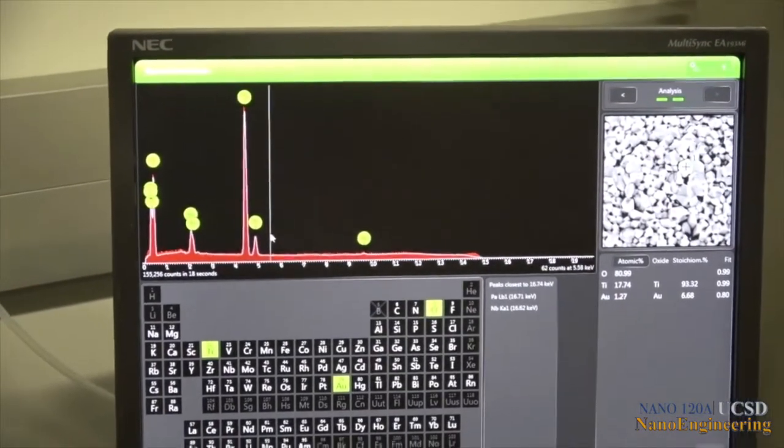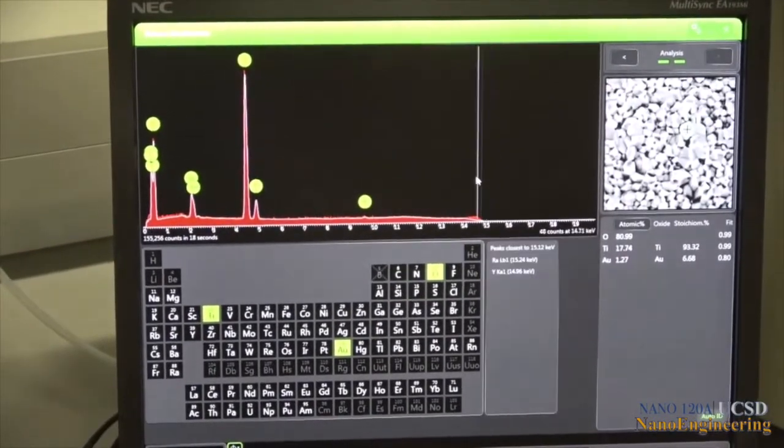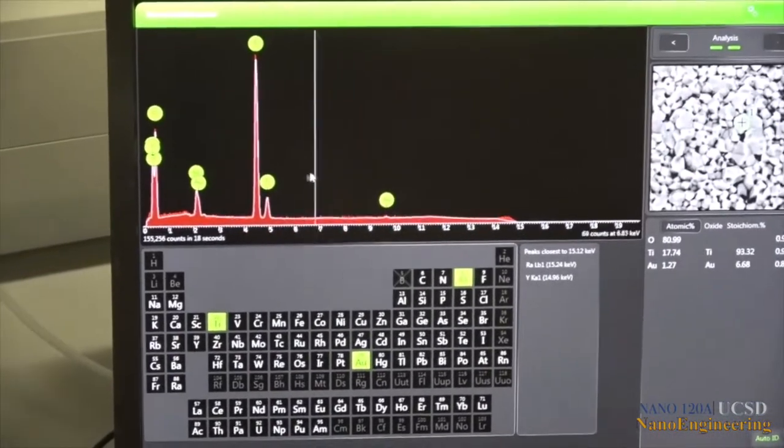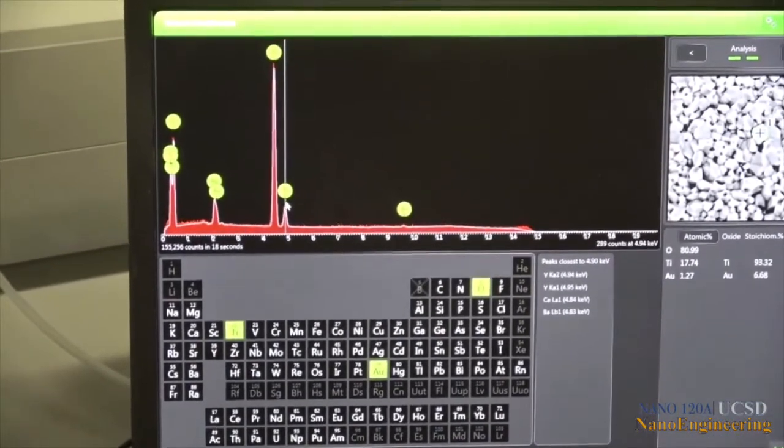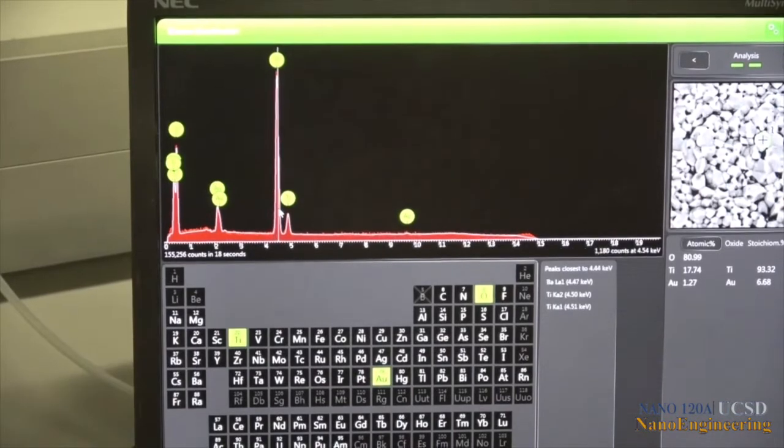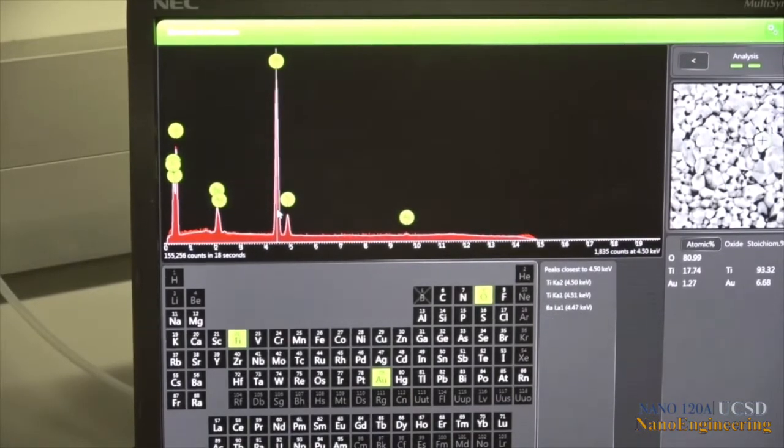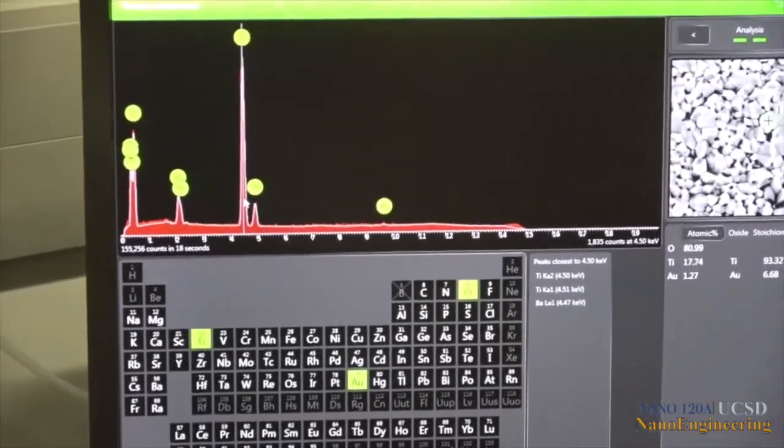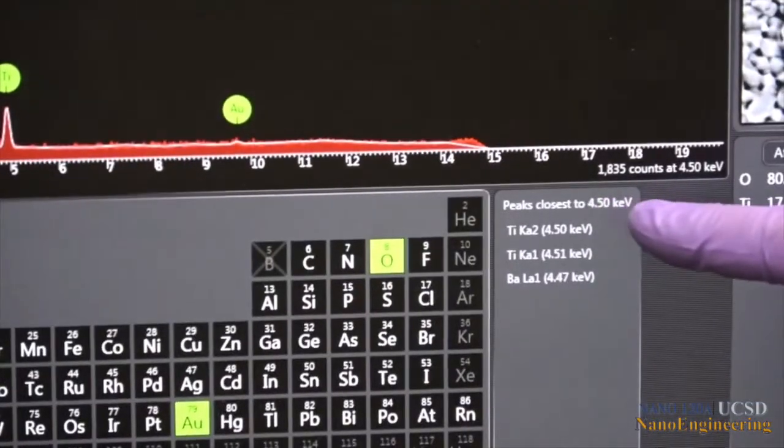Moving the cursor into the spectrum causes a vertical line to appear that can then be placed at various energies to see what elements may appear there, or in the case of a peak, what elements may be contributing to that peak or close to that peak in energy. This information is shown in the list to the right of the periodic table.